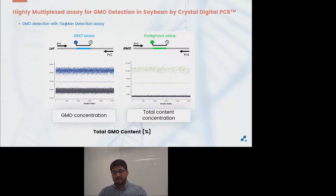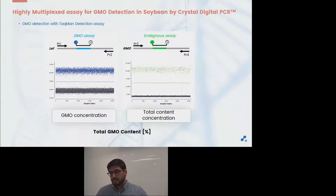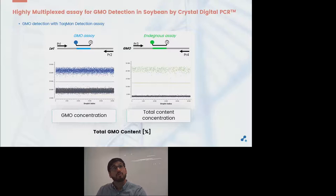Here you can see a typical TaqMan detection assay designed for GMO detection, with a specific amplification of the GMO target detected by blue probes. Using another probe targeting an endogenous gene — here with a green probe — we can define the total amount of DNA material and calculate the total GMO content of the samples in this classical TaqMan detection assay.